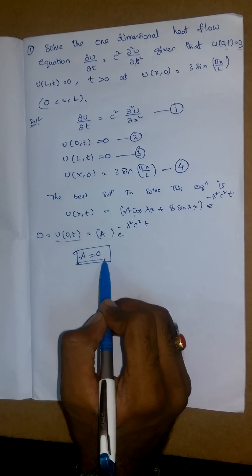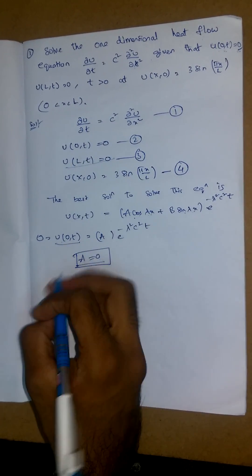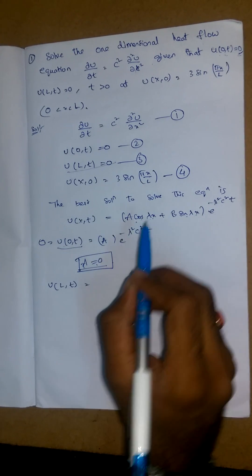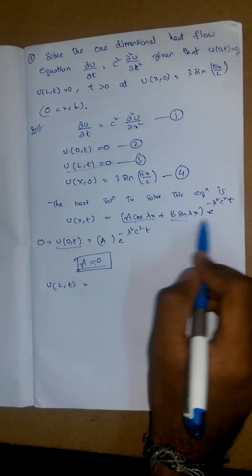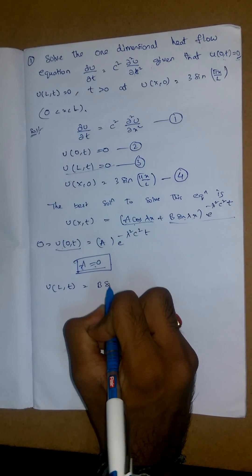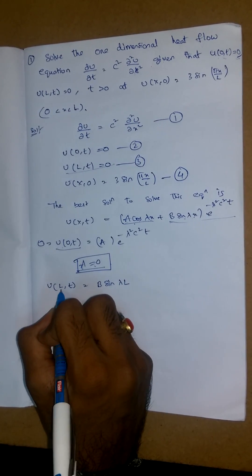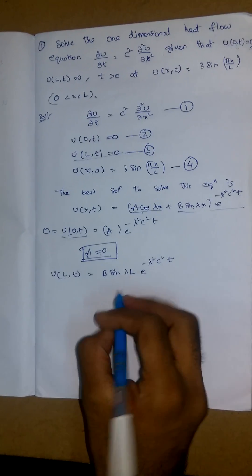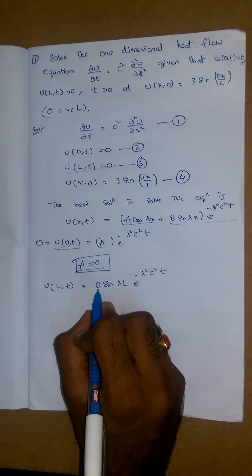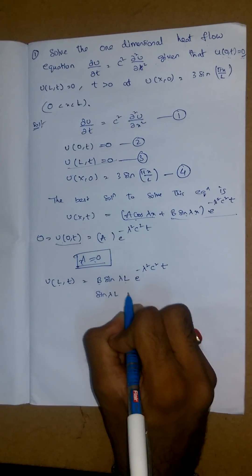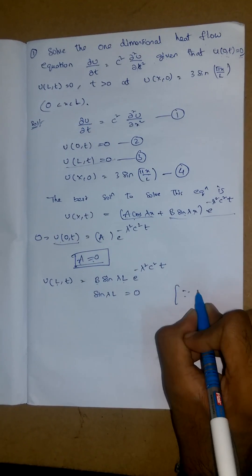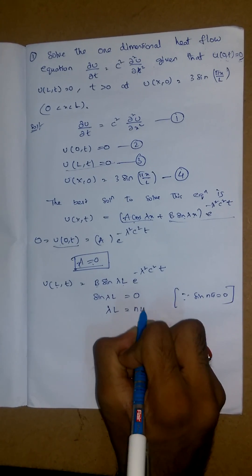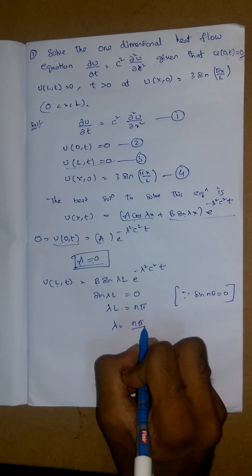Now substituting the second boundary condition u(L,t) = 0. Since A = 0, only the sine term remains: B sin(λL) · e^(−λ²c²t) = 0. Since B must not equal 0, we need sin(λL) = 0. We know sin(nπ) = 0, so λL = nπ, giving λ = nπ/L.